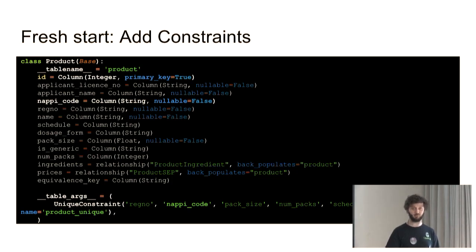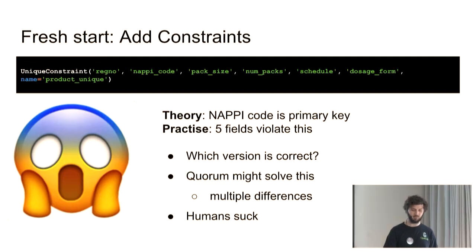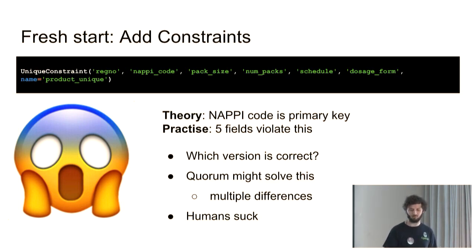Fine — add pack size to the unique constraint. Load the data. Error. Duplicate key. Eventually I added five different additional things to the unique constraint. What this shows is the data model is absurd — which is fine, because the data is absurd, and it's better that we know it and acknowledge it before we do analysis. In theory the NAPPI code is a unique identifier; in practice there are variations all over the dataset. For two or more versions of a product, which one is the correct one? Perhaps you can use the odd one out — but perhaps that was the correction of all the others. It's more complicated than that.